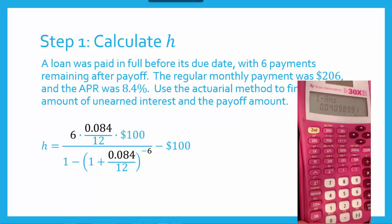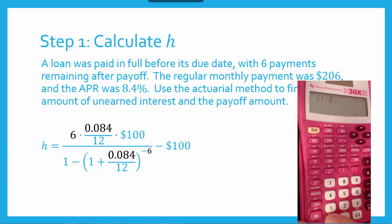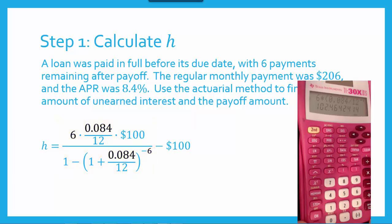Now the denominator is saved as the answer. So now I'm going to type in the numerator: 6 times, and I'm going to take advantage of my parentheses just to make sure we maintain order of operations correctly. When I have a fraction, I like to put it in parentheses. So I'm going to say 0.084 divided by 12, all in parentheses, times 100. And I'm not going to hit equals, because now I want to take that quantity and divide it by the answer from the previous calculation — so divided by second-answer, equals. So now this is the value of the entire fraction, and we just need to subtract 100 from that: minus 100, equals. So H is approximately $2.46, rounding to the nearest cent. We're done with step 1.